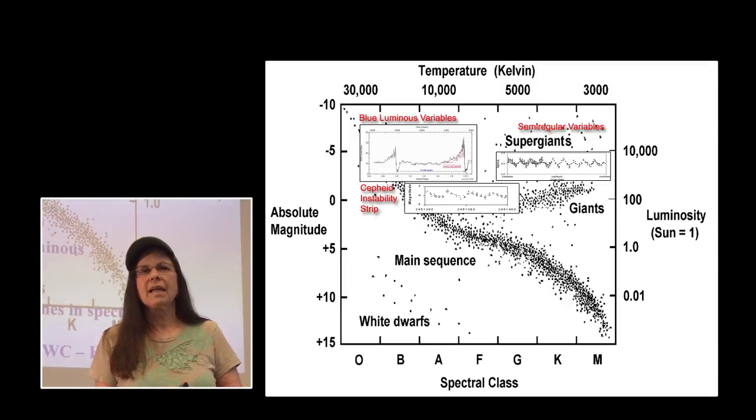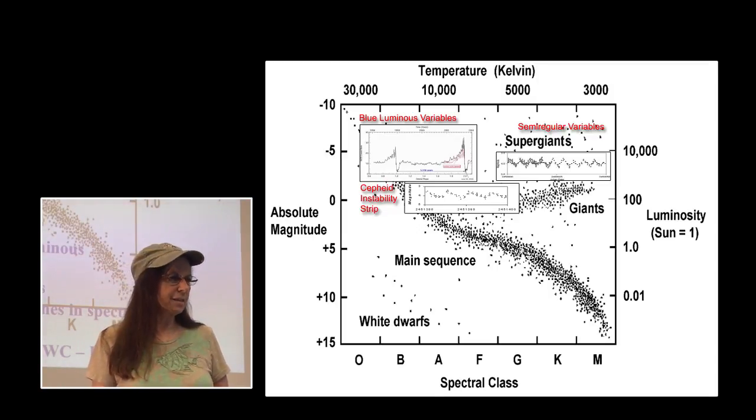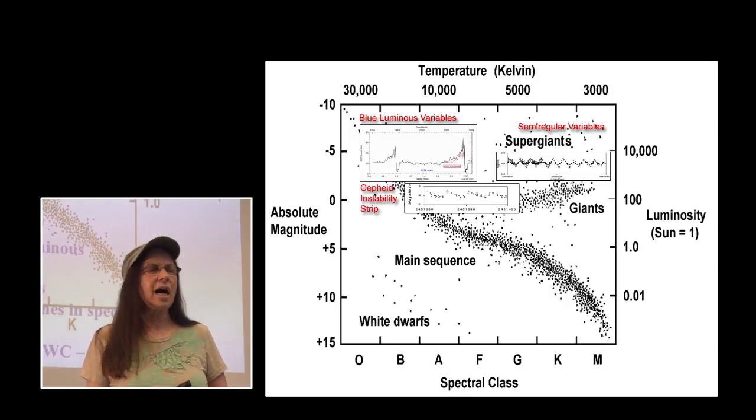Also within these stages, the Wolf-Rayets are up there. Just to give you a heads up that the Wolf-Rayets are confusing. You don't normally see them plotted on an HR diagram. They're highly massive, highly luminous.